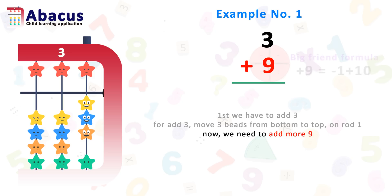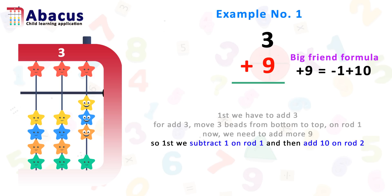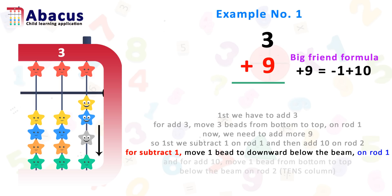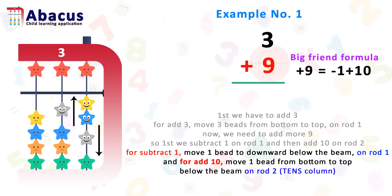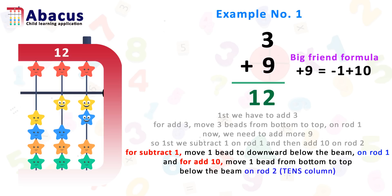So we can't add more 9 beads, so we have to use the big friend formula for adding 9. Formula: plus 9 is minus 1 plus 10. So first we subtract 1 on rod 1 and then add 10 on rod 2. For subtract 1, move 1 bead downward below the beam on rod 1. For add 10, move 1 bead from bottom to top below the beam on rod 2. Rod 2 is the 10's column. And the answer is 12.